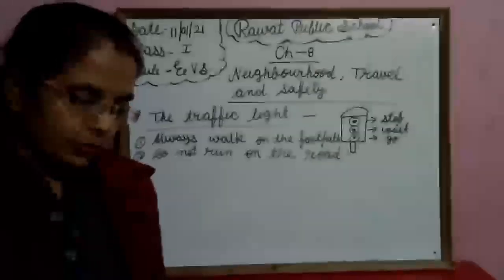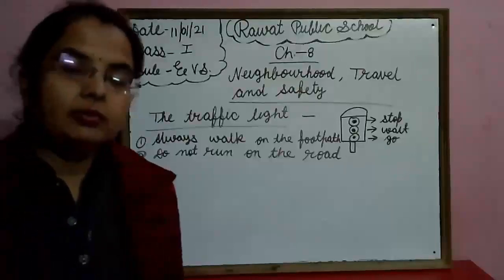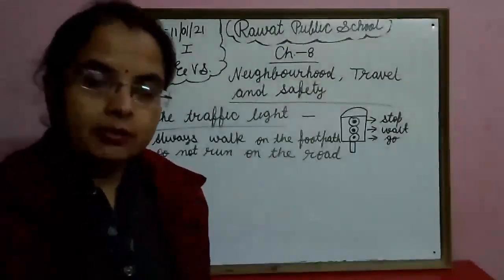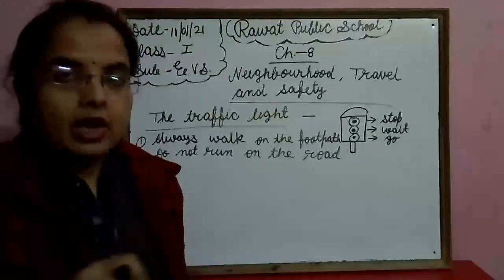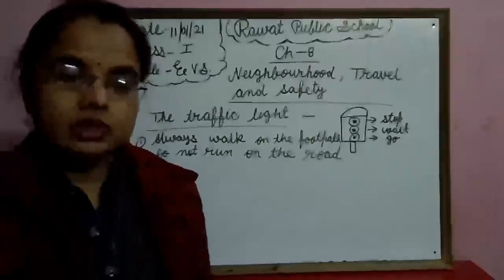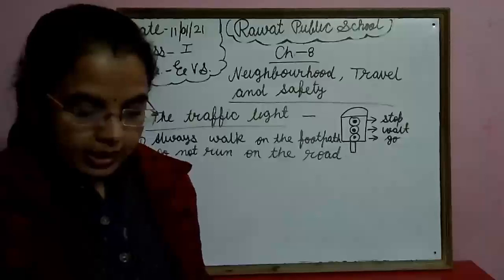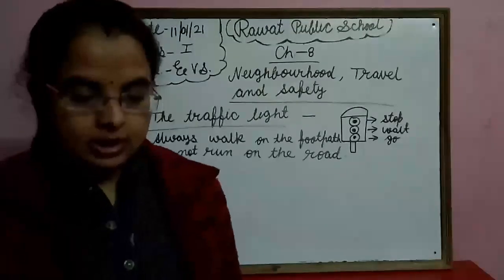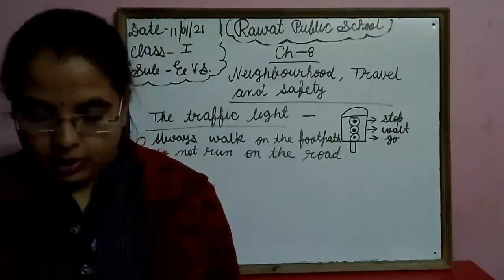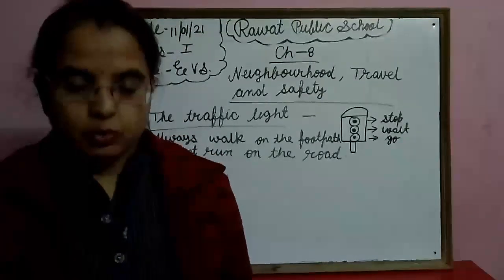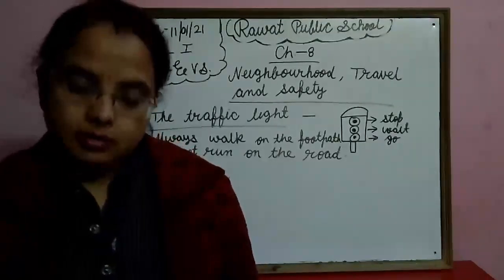And cross the road at the zebra crossing. जब हम road cross करते हैं, तब हम zebra crossing पर ही road cross करते हैं। आप देखते होंगे road पर white-black, white-black बनी होती है — इसे zebra crossing कहते हैं। Stand in a queue while boarding the bus. जब हम bus का wait करते हैं, तब हमें queue में खड़े होना चाहिए।